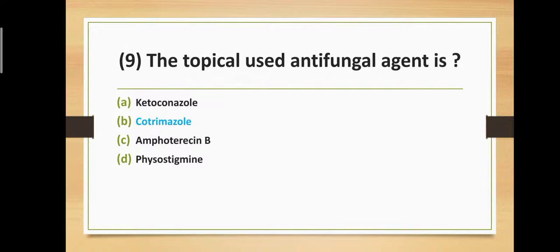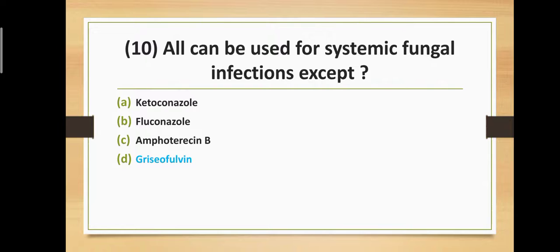Question number ten: All of the following can be used for systemic fungal infections except — which drug is not used for systemic fungal infections? Option A: ketoconazole, Option B: fluconazole, Option C: amphotericin B, Option D: griseofulvin. The correct answer is Option D — griseofulvin is not used for systemic fungal infections.